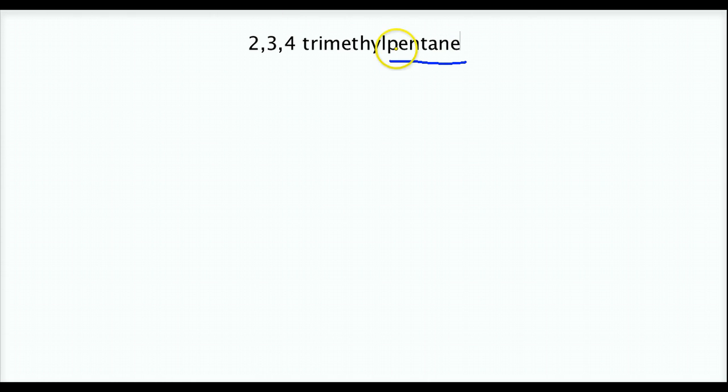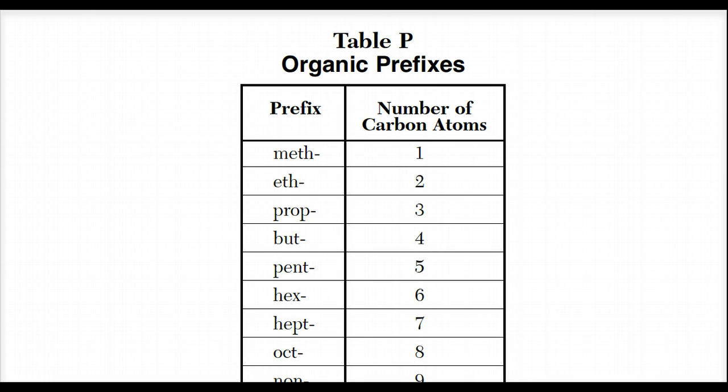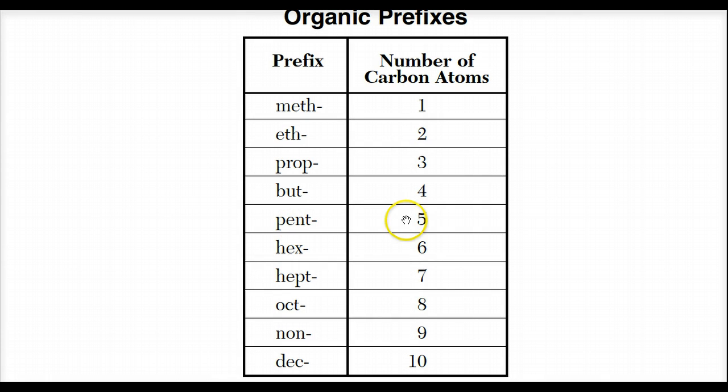So the first thing I'm going to look at is the pent. The pent tells me there are five carbons in the longest continuous chain. Now, if I didn't know pent is five carbons, I can look at my reference table. Reference table P tells me that pent is right here, and it's five carbons. So we have one through ten listed, so pent is five.